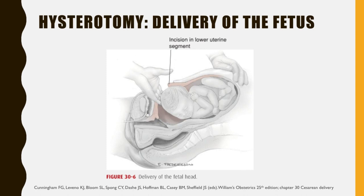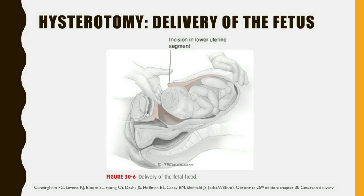In a cephalic presentation, a hand is slipped into the uterine cavity between the symphysis and the fetal head, and the head is elevated gently with the fingers and palm through the incision. Delivery may be aided by modest transabdominal fundal pressure applied by the anesthesiologist or assistant. After a long labor with cephalopelvic disproportion, the fetal head may be tightly wedged in the birth canal. In such cases, a push method may be used, where upward pressure exerted by a hand in the vagina by an assistant helps to dislodge the head. Relief of such head impaction increases the risk of hysterotomy extension, blood loss, and fetal skull fracture.